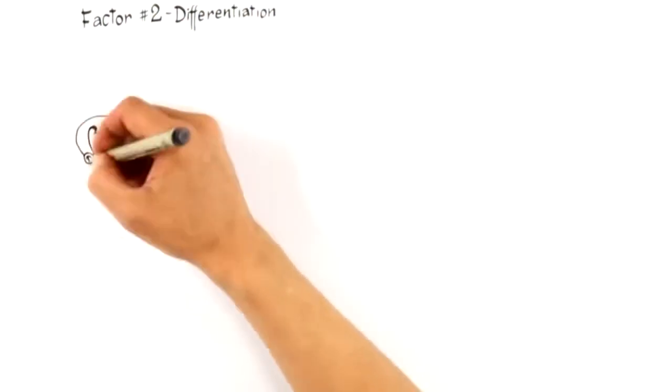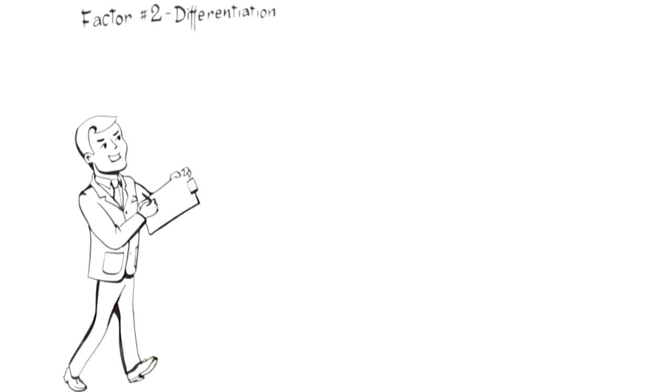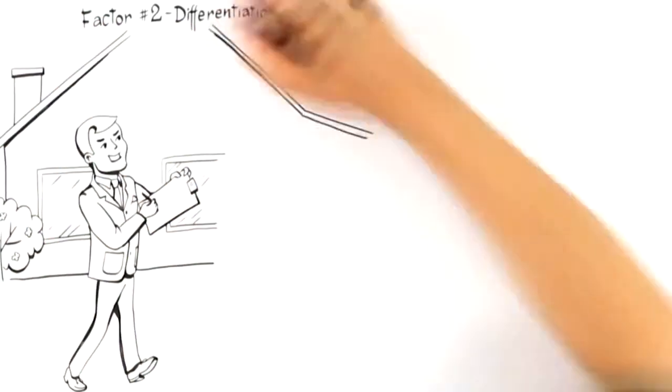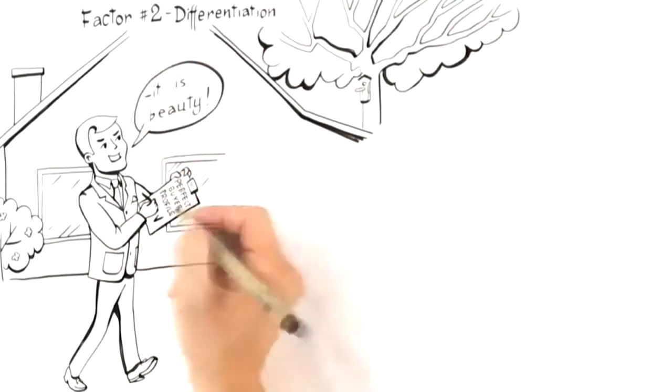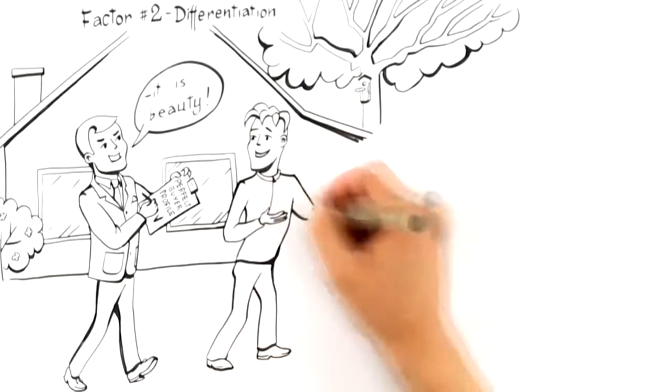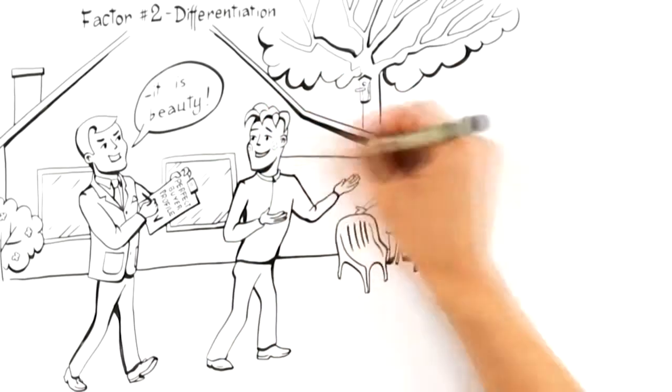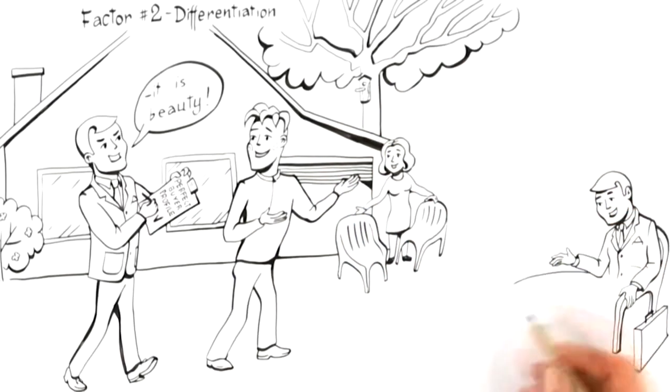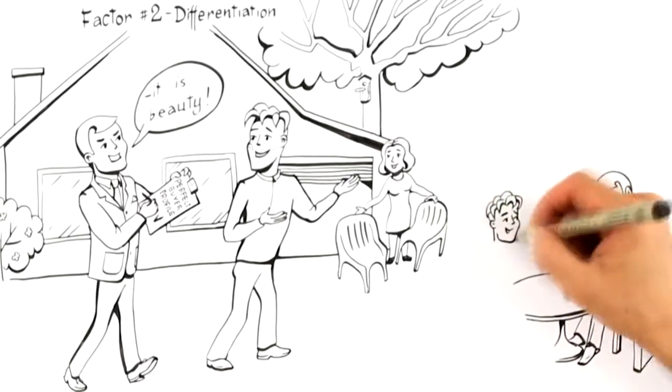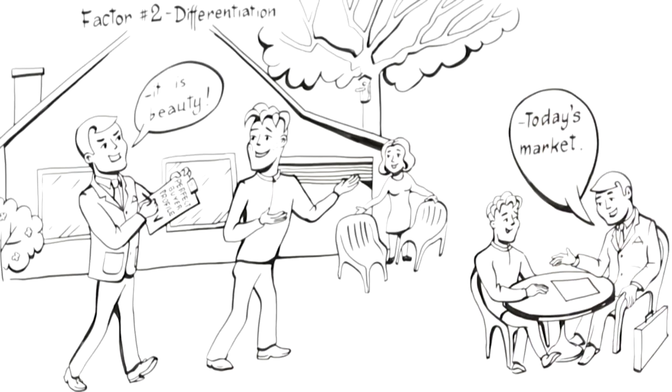This leads us to factor number two, differentiation. To attract the highest possible offer, a home must be positioned to attract buyers who will perceive its highest value. Expert advertisers understand that there is a perfect buyer profile for the buyer that would be willing to pay the most money for your home. Expert advisors attract these perfect buyers by differentiating your home from other homes on the market by first anticipating a buyer's wants and needs. As you'll notice, the key focus here is not on past market sales, but what is likely to attract a top-paying buyer in today's market.